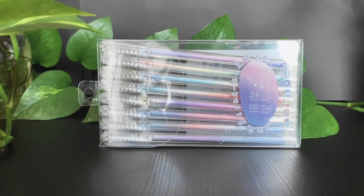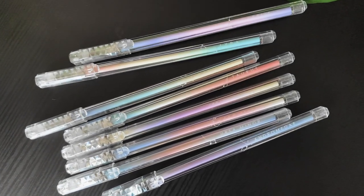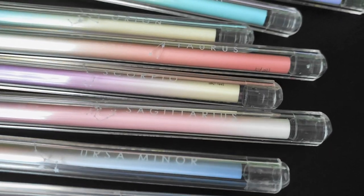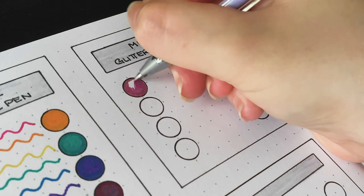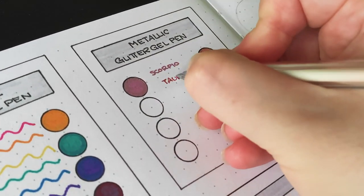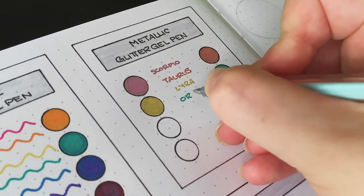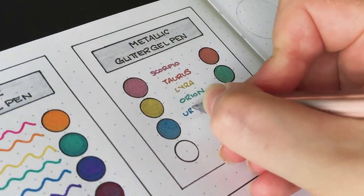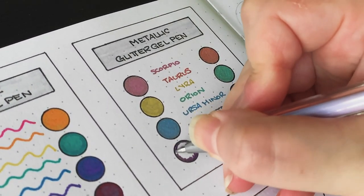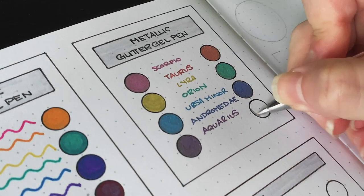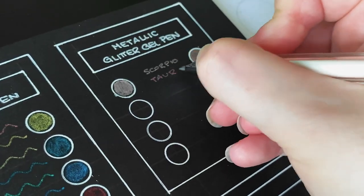Next up is the metallic glitter gel pens. They also come in a set of eight. First impression is that these are gorgeous, but what the heck colors are they going to be? I'm glad that there's at least names on the side because otherwise my main gripe with these would be being completely unable to tell what color you're using until you color with it. Apart from that though, I think they're really fun. The colors are gorgeous and I love that they've named them constellations. They also show up relatively well on the black paper and they're very smooth to write with as well.